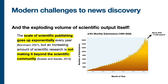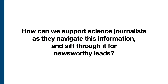Here's a visual display of how the arXiv monthly submissions have skyrocketed over the last few decades. On the y-axis, you can see the number of submissions, whereas on the x-axis you can see the month of the year. March 2022 saw roughly 17,000 papers uploaded just to the arXiv server. This is a lot of information for any journalist to go through. And so, in the context of these upheavals, we ask the question: how can we support science journalists as they navigate all this information and sift through it for newsworthy leads?